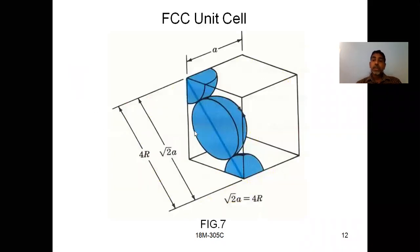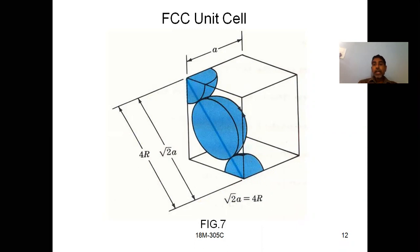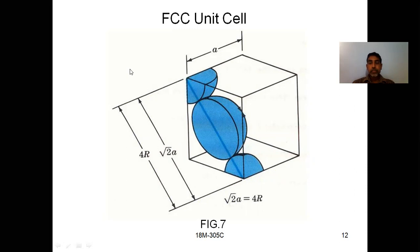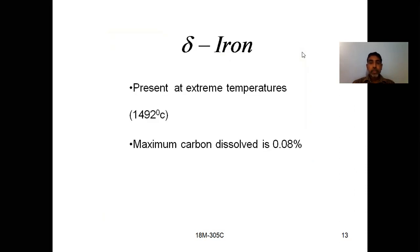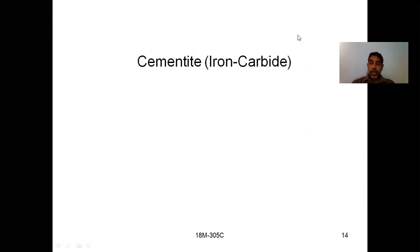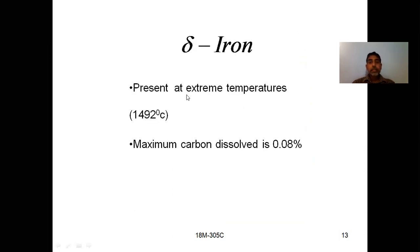Similarly for the BCC unit cell, parameters involving A and R (lattice parameter and atomic radius) are important for competitive exam purposes. You will learn these in higher studies. Just for understanding, these parameters are very useful for competitive examinations.